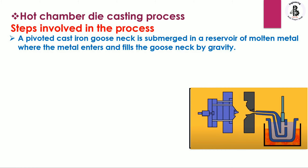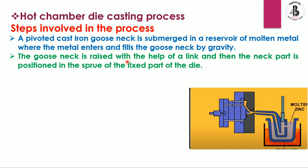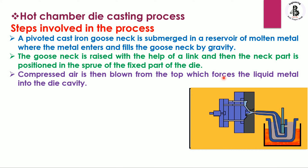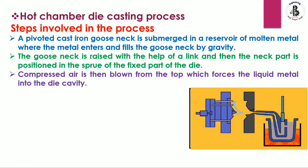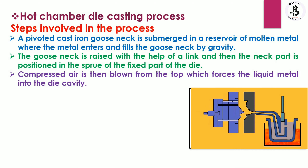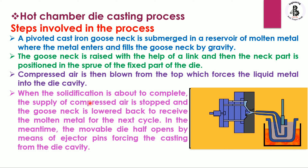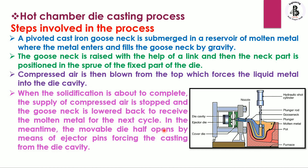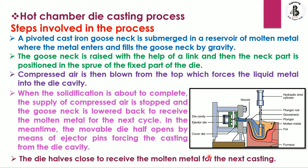The gooseneck is submerged into the molten form of the metal. The gooseneck is raised with the help of a link and then the neck part is positioned into the sprue of the fixed part of the die, so the molten metal is inserted through the nozzle into the die. Compressed air is blown from the top to force the liquid metal into the die cavity. When solidification is nearly complete, the pressure is stopped and the gooseneck is lowered back to receive molten metal for the next cycle. The movable die opens and ejector pins force the casting from the die cavity. The die then closes to receive molten metal for the next casting.